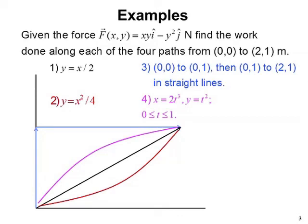For an example, we assume a fairly complicated force which depends upon position. We want to find the work done along each of the four paths from (0,0) to (2,1). Take the distance in terms of meters in order to make the product of force times distance joules. Path 1 is a straight line from (0,0) to (2,1). Path 2 is a parabola. Path 3 is to break the path up into two steps. And path 4 is a parametric relationship between x and y in which x and y are both related to t.